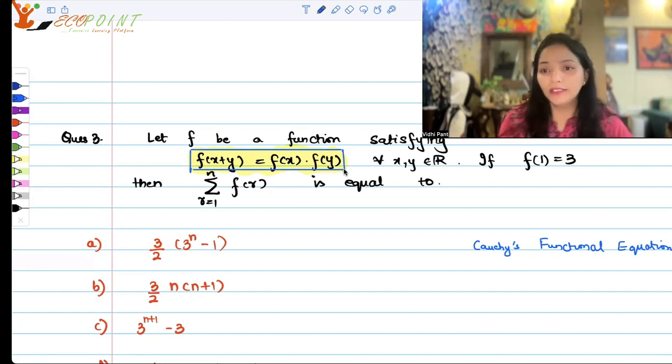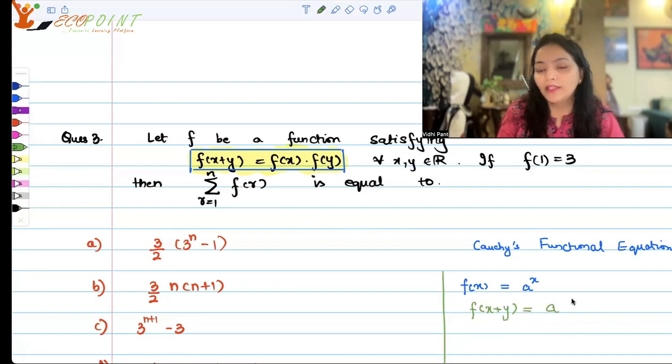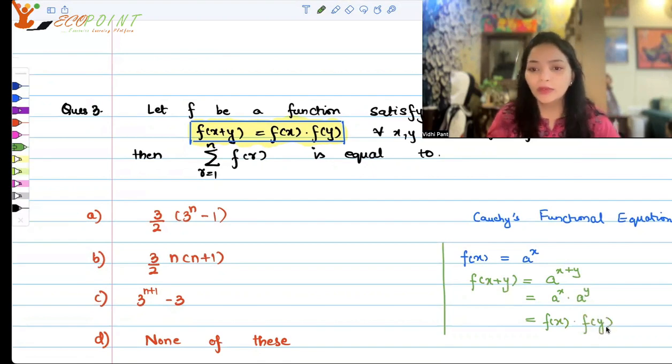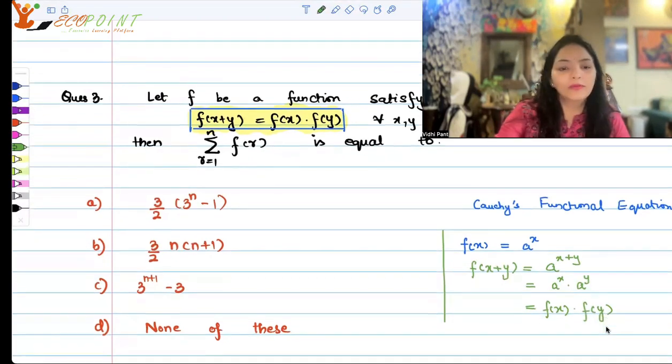The property that you can see here, I hope you can recognize this property. This is more commonly, you can recognize this property as the exponential property. The functions that will satisfy this property are of the form a^x. Again, you can counter-check yourself. If you consider your left-hand side, f(x+y), it would look like a^(x+y), which since this is an exponential form, so you can write it as a^x × a^y, because base is same, and a^x is f(x), a^y is f(y). So hence, what do you get? f(x+y) = f(x) × f(y), right?